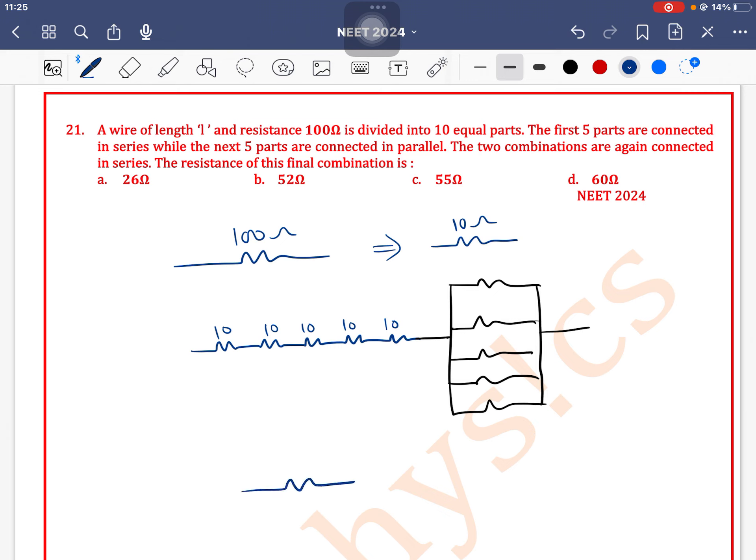For the parallel combination, when same value resistors are connected in parallel, the equivalent resistance is the resistance of a single resistor divided by the number of resistors. The resistor value is 10 and there are 5 resistors, so 10 divided by 5 equals 2. And 50 plus 2 is 52 ohm, so option B is the correct answer.